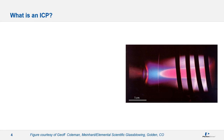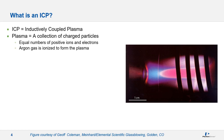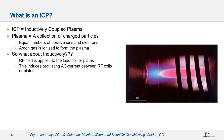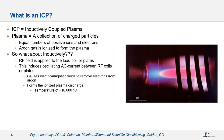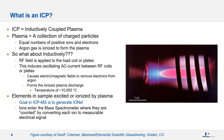ICP stands for Inductively Coupled Plasma. In the ICP, argon gas is ionized for the plasma discharge, which is a collection of positive ions and electrons. An RF field is applied to the load coil or plates, causing an oscillating AC current, which generates electric and magnetic fields at the top of the ICP torch to ionize the argon gas. The argon ICP has a temperature of about 10,000 degrees centigrade and can ionize most elements in the periodic table. In ICP-MS, the goal is to convert all analyte atoms to ions in the plasma so they can be measured and related to the concentration of the element in your solution.